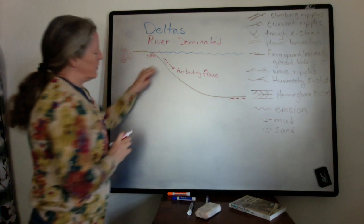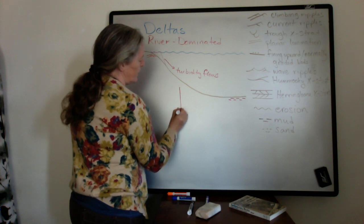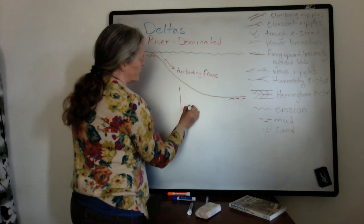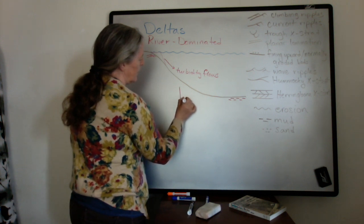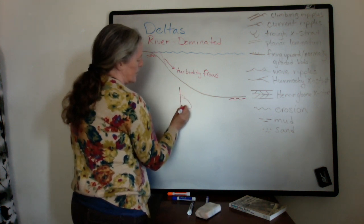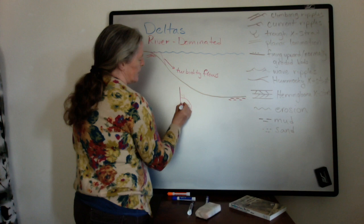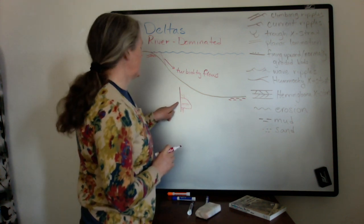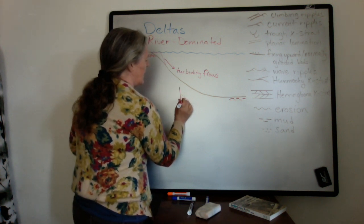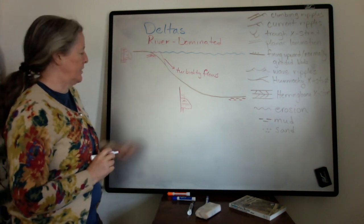In the stratigraphic column, you'd accumulate mud between flows, then you'd have a turbidite, and then you would accumulate mud again. This lower part would be massive, and then you'd have the upper planar lamination, so the massive part is the Bouma A sequence, the planar lamination is Bouma B. And then you get the current ripples, and then the faint lamination at the top, and go back to your deposition here.